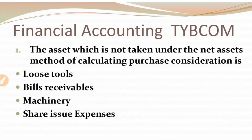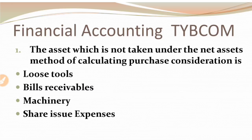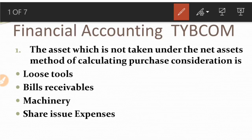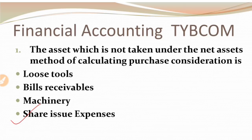MCQ 1: The asset which is NOT taken under the net assets method of calculating purchase consideration. Options are: loose tools, bills receivable, machinery, and share issue expenses. In the net assets method, we do not include fictitious assets. Looking at the options, share issue expenses is a fictitious asset. So the right answer is share issue expenses.